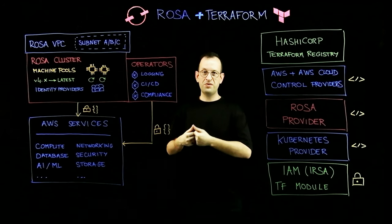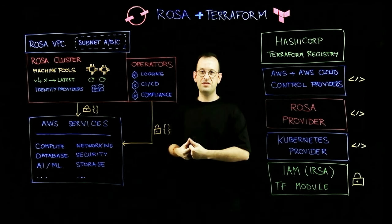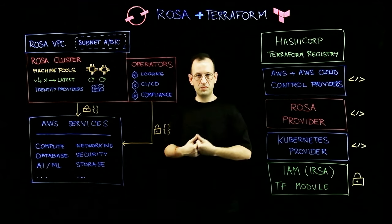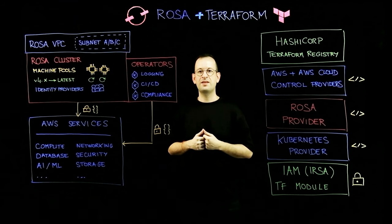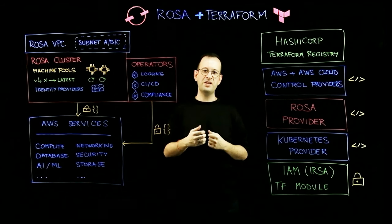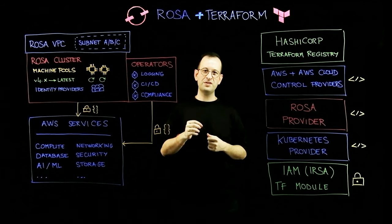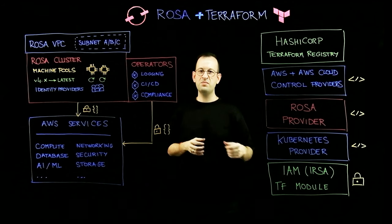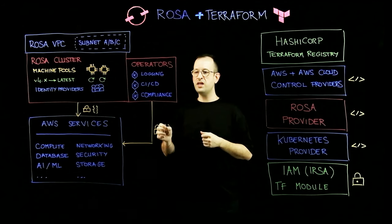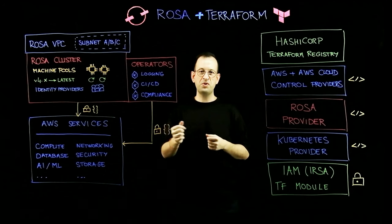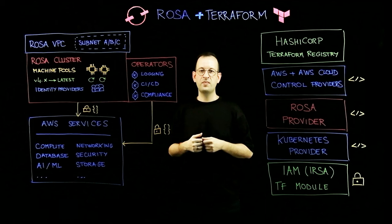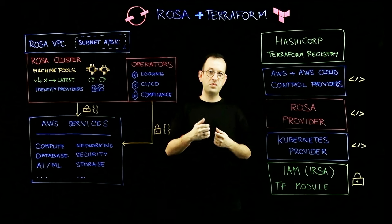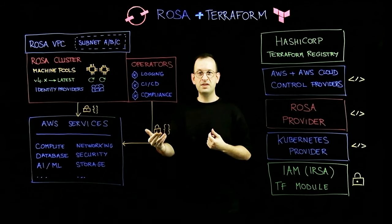At this point you are already ready to replicate your cluster across multiple environments — test, dev, and production — or across multiple teams and business units. The next step is typically deploying applications and giving them access to other AWS services. To do that, you can use the IAM Terraform module and bring in custom IAM policies or managed policies attached to your applications. This helps apply the principle of least privileged access and use temporary credentials for your applications to access AWS services.